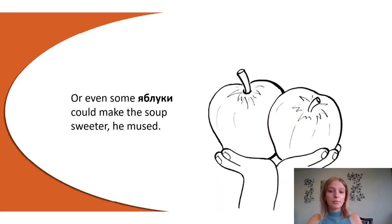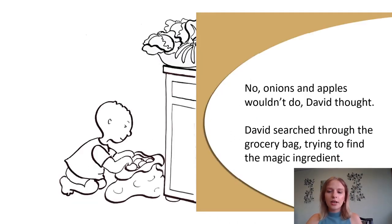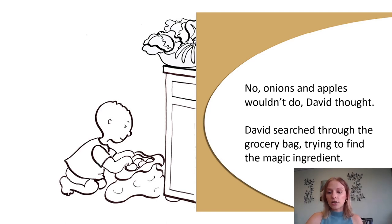"Or even some yabloki could make the soup sweeter," he mused. "No, onions and apples wouldn't do," David thought. David searched through the grocery bag, trying to find the magic ingredient. Alright, that's all I'll be sharing with you all. Thank you so much for listening.